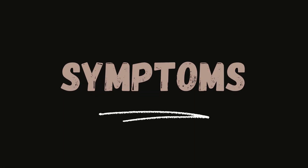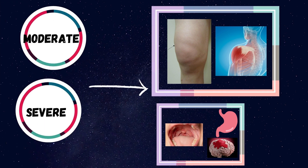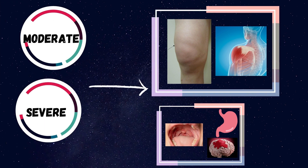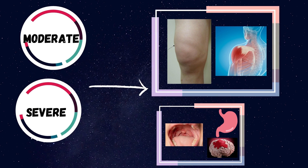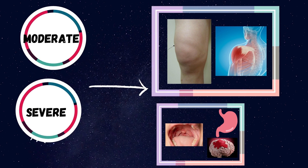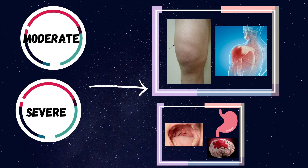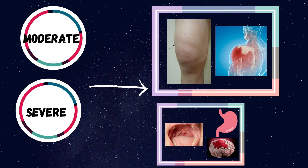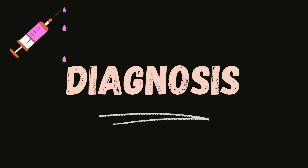Regarding symptoms: mild disease is usually asymptomatic. Moderate disease has clinical features like bleeding into the muscles and bleeding into joints — that is hemarthrosis. Severe disease has clinical features like mucosal bleeds, GI bleeds, or intracranial bleeds.